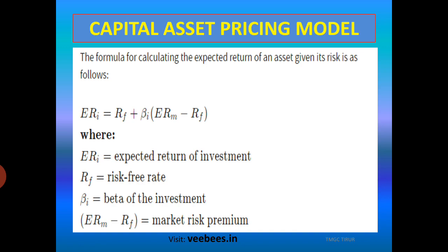Generally, a treasury bill is considered to be the risk-free security, so if the treasury bill return is given, that is considered as RF — risk-free rate. Beta means the systematic risk coefficient. RM means the market return — the return of a risky security. RM minus RF is the risk premium — the difference between market return and risk-free rate is equal to risk premium.